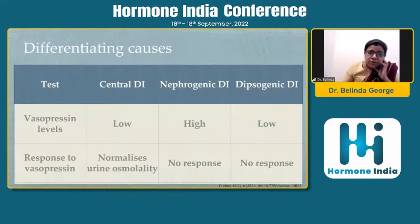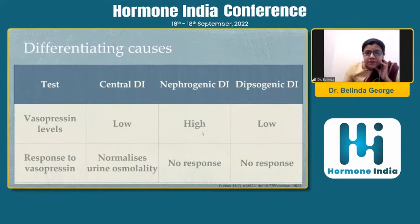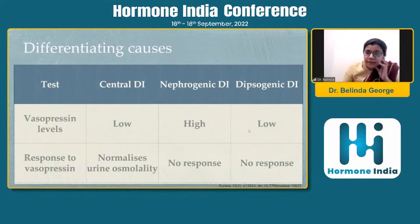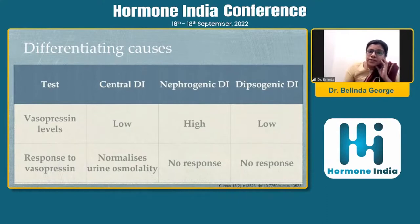Common sense tells us that all we have to do is look at vasopressin levels and give some vasopressin and see the response. In central DI, you expect vasopressin to be low but the patient responds well to exogenous medication. In nephrogenic DI, basal vasopressin will be high and exogenous desmopressin won't have any response. In dipsogenic DI, vasopressin levels are low and the patient also does not respond adequately to exogenous vasopressin. So this should be pretty straightforward to differentiate.